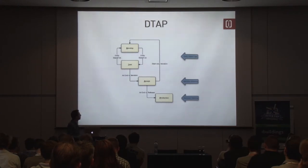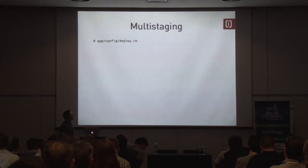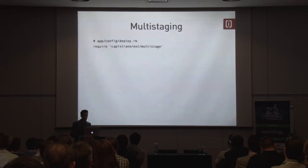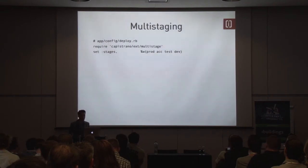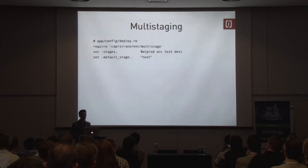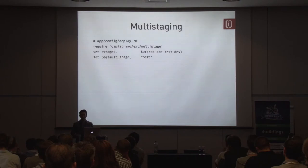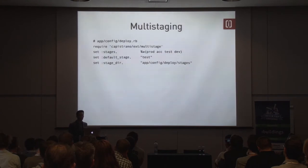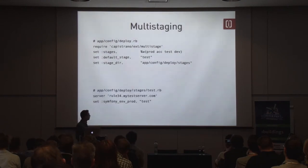Going back to the DTAP setup, Capistrano comes with a multi-stage extension. You require the multi-stage, set your stages — you can have as many as you want. In this case I used a default DTAP. Set your default stage to test — I would recommend always doing this, because if you accidentally forget to pass in the stage, it will fall back to this one. If that's production, you're accidentally deploying to production. You don't want that. Then you just have config files for the specific stages.